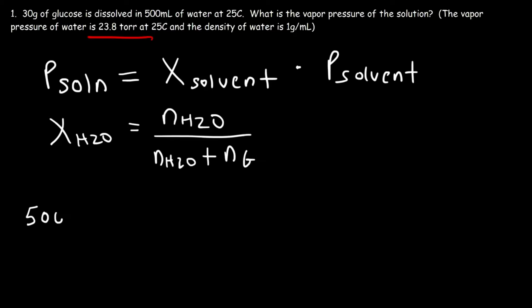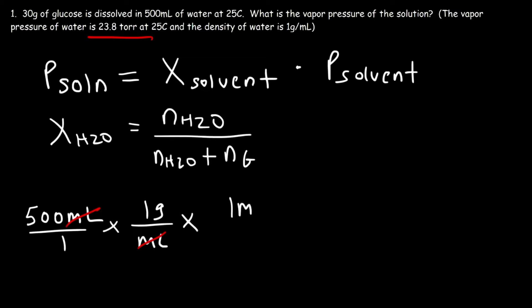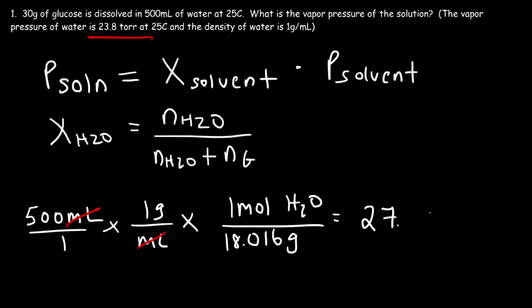Let's calculate the moles of each substance, starting with water. We have 500 milliliters of water and the density of water is 1 gram per milliliter, so we have 500 grams of water. The molar mass of water is about 18.016 grams per mole, so 500 divided by 18.016 gives us 27.753 moles of water.